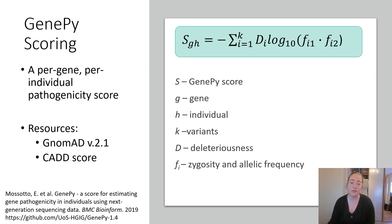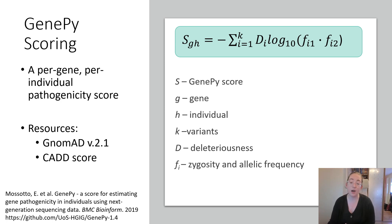One of the processing steps we employed for whole exome sequencing data was the use of GenoPI scores, which condenses all the mutation-level information in each gene into a singular score. For each variant, the score incorporates zygosity, allele frequency, and predictive pathogenicity, and sums all the information on each variant together. Afterwards we have a patient-by-gene score matrix, which is more suitable input for machine learning than variant-level information.